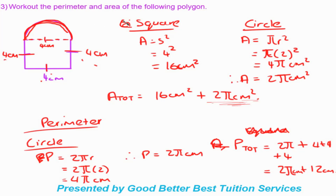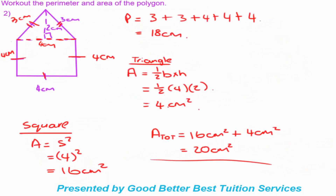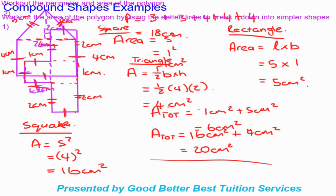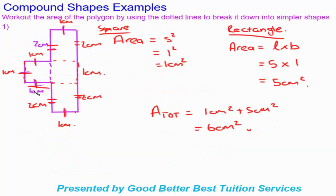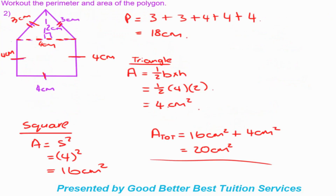So to summarise: when working with compound shapes, use the dotted lines to break them into simpler shapes. Work out areas separately and add them together. When it comes to perimeter, only take the exterior of the shape — not the internal lines. When working with circles, leave answers in terms of pi. That's it for today's lesson, thank you very much for joining us.